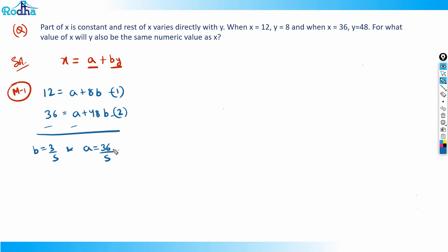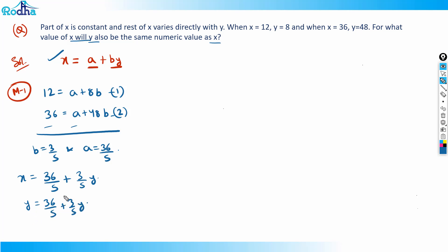So the equation becomes x = 36/5 + (3/5)·y. Since x and y must have the same numeric value, I replace x with y: y = 36/5 + (3/5)·y. Solving for y gives y = 18, and since x equals y numerically, x is also equal to 18.